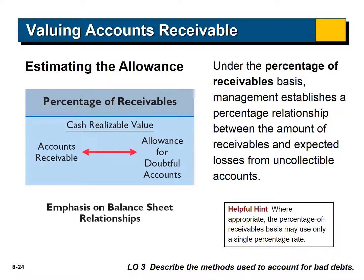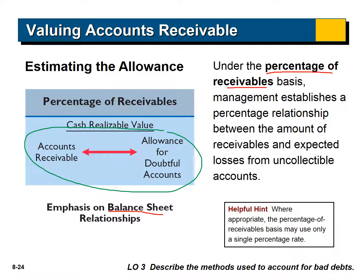The allowance method is the way we should be doing it. We have something called the percentage of receivables basis, which is an alternative to the percentage of sales method. This method emphasizes the balance sheet relationships — it shows the relationship between your two balance sheet accounts: accounts receivable and the allowance.